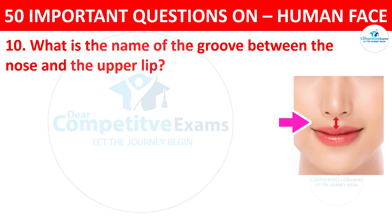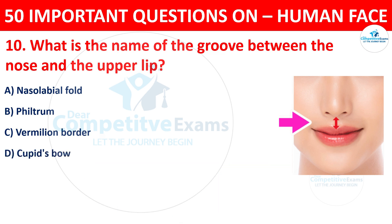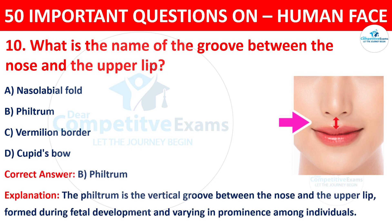Question number ten: what is the name of the groove between the nose and the upper lip? The options are nasolabial fold or philtrum. The correct answer is B, philtrum. The philtrum is the vertical groove between the nose and the upper lip, formed during fetal development and varying in prominence among individuals.